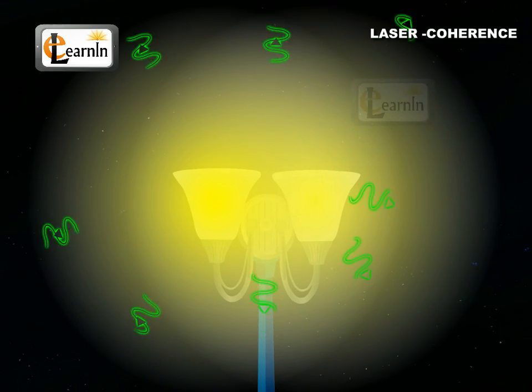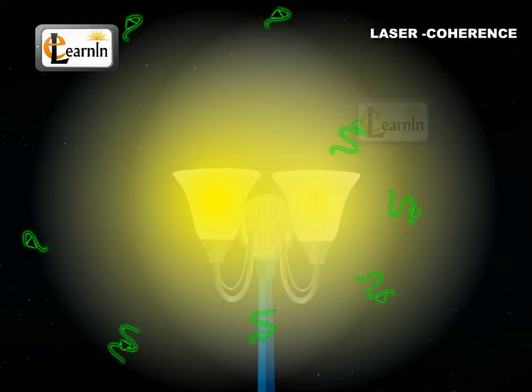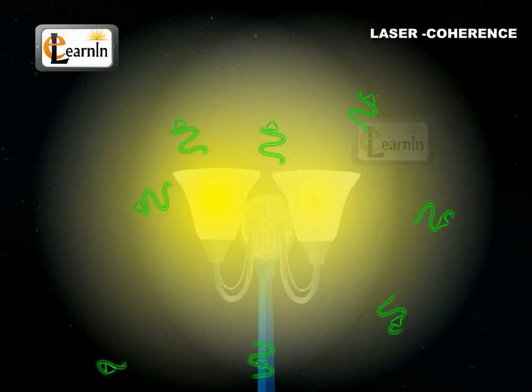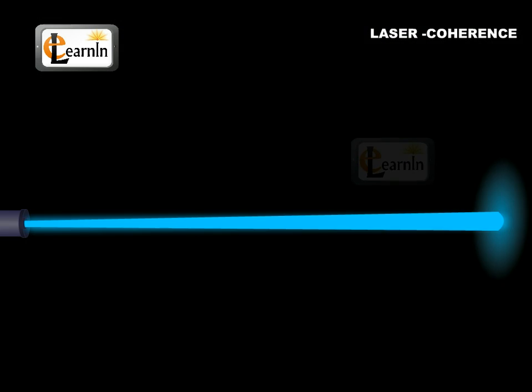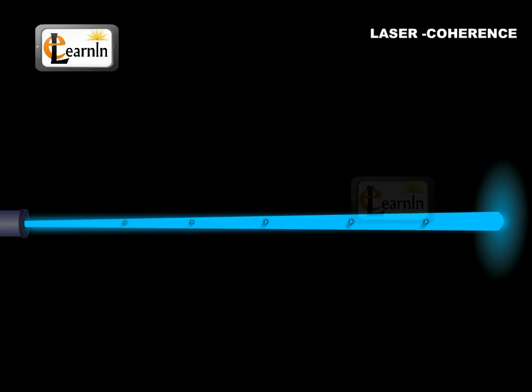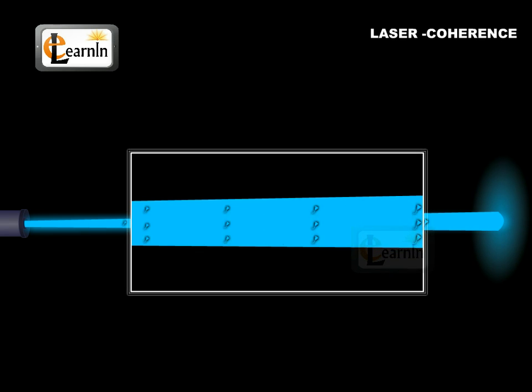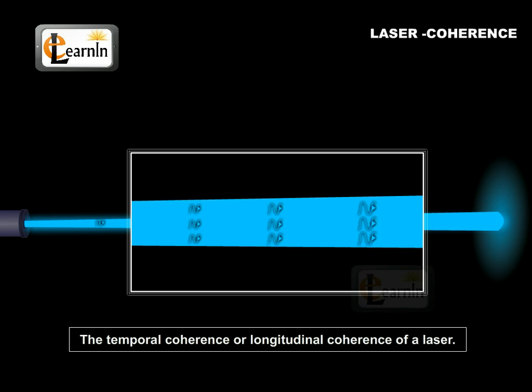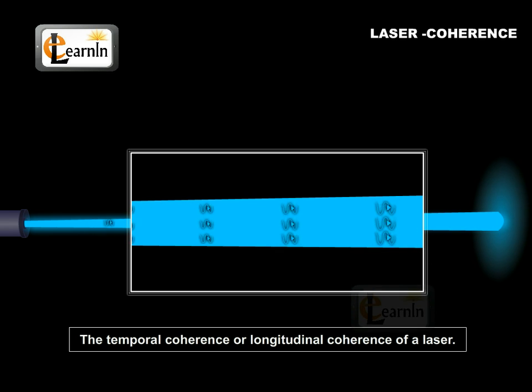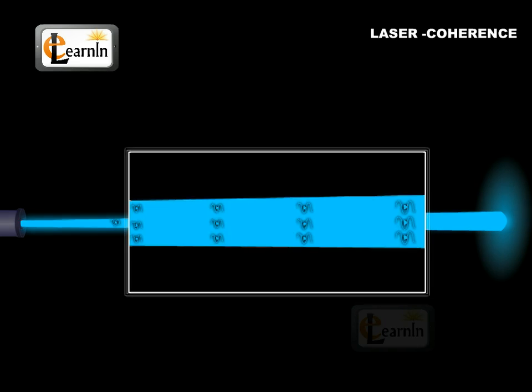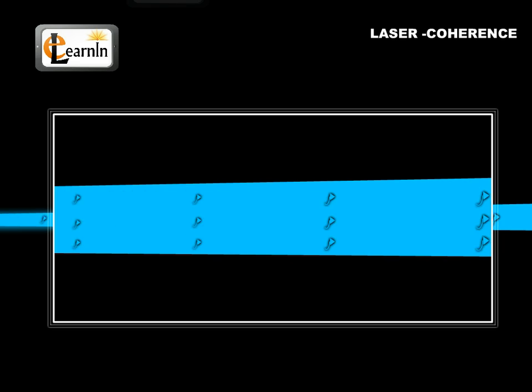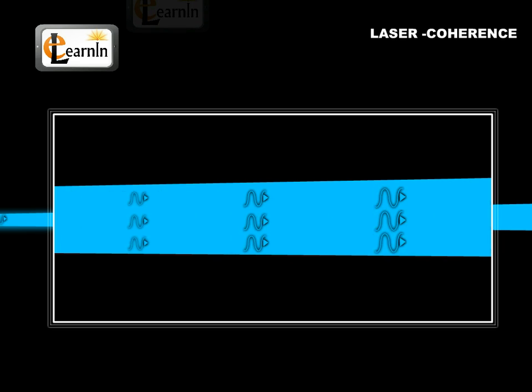This is why there is no exact phase relation among light waves that fall at any particular point. However, in some cases these transitions to the ground state take place in an orderly fashion with respect to time. This means the light waves exhibit a phase relation whenever they fall at a particular point. This is called the temporal coherence or longitudinal coherence of a laser. Temporal coherence is the single most important characteristic of a laser.